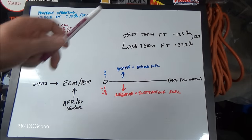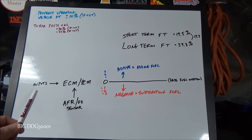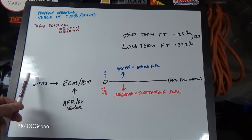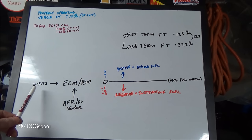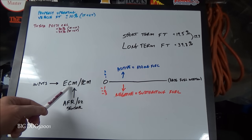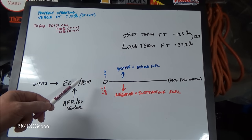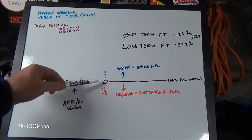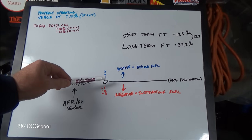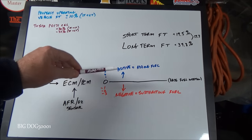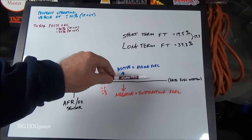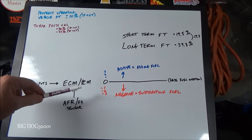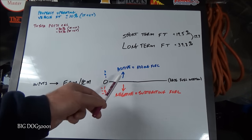Zero is our baseline — this is how much fuel we should be injecting based on all the inputs coming in. Once the engine is running, the air-fuel ratio sensor or oxygen sensor tells the computer whether there's too much fuel or not enough. Based on that input, we're either having to add fuel — positive fuel trim numbers — or take fuel away — negative fuel trim numbers.